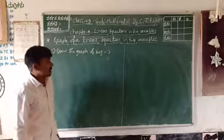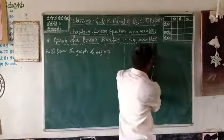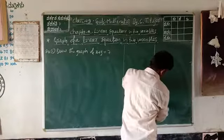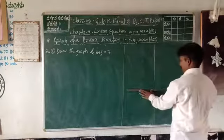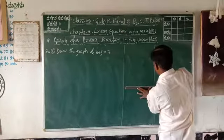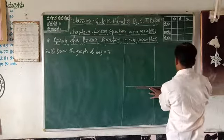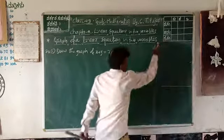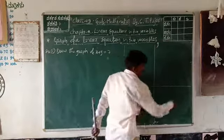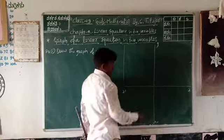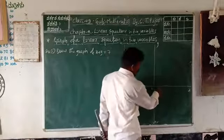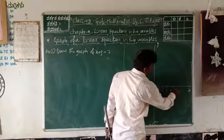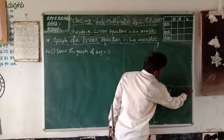You can construct the graph. First draw the Cartesian plane. On the X axis and Y axis, mark the origin as zero, then mark values 1, 2, 3, 4, 5, 6, 7, 8 in the positive direction, and minus 1, minus 2, minus 3, minus 4, minus 5, minus 6, minus 7, minus 8 in the negative direction.